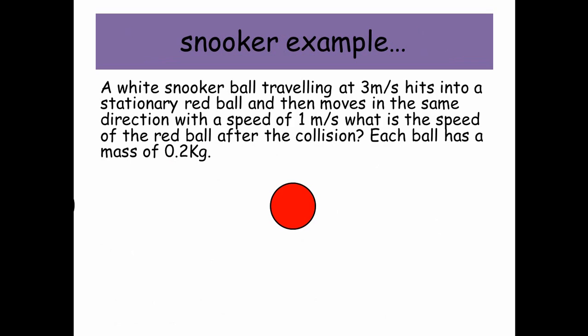So let's have a look at an example. A white snooker ball traveling at 3 meters per second hits into a stationary red ball and then moves in the same direction with a speed of 1 meter per second. What's the speed of the red ball after the collision? Each ball has a mass of 0.2 kilograms. So the initial momentum is equal to m1u1 plus m2u2. So it's 0.2 times by 3. The red snooker ball doesn't contribute any momentum because it's at rest, so its velocity is 0. So the total momentum to begin with is 0.6 kilograms meters per second.